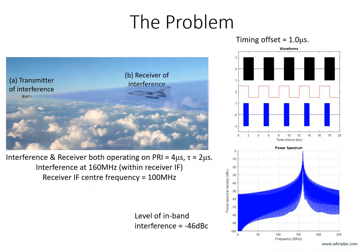If now the two radars close, the timing offset becomes 1 microsecond, resulting in 1 microsecond pulse fragments of interference. The wider pulses of interference result in a reduced spectral spread, and this time the interference level at 100 MHz is 46 dBs below its peak. The absolute value of this peak will however be 6 dBs higher than the previous case because the longer pulse fragments contain more energy. Nevertheless there is still a 6 dB reduction in the absolute level of in-band interference.